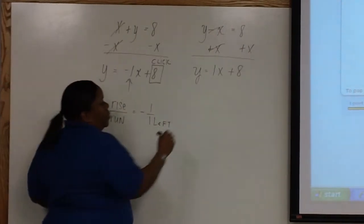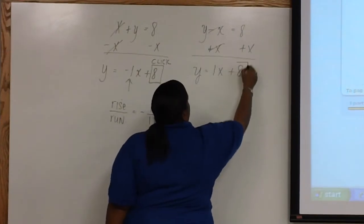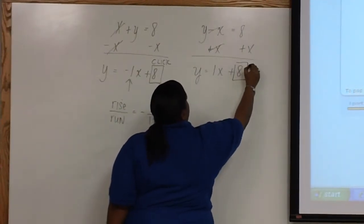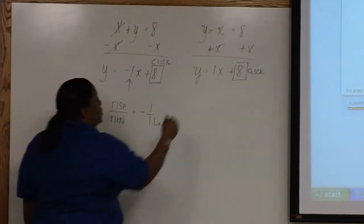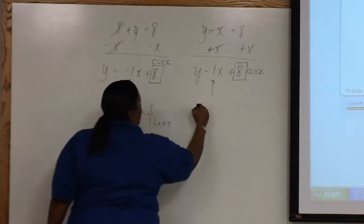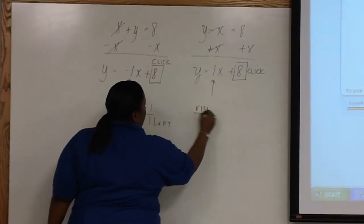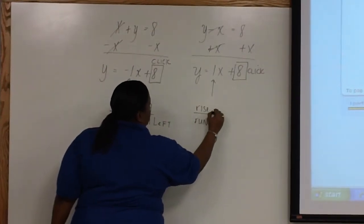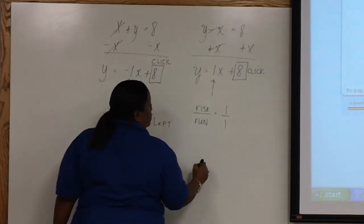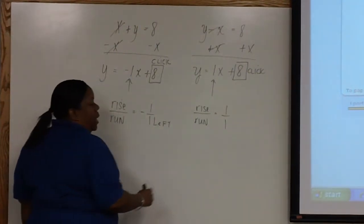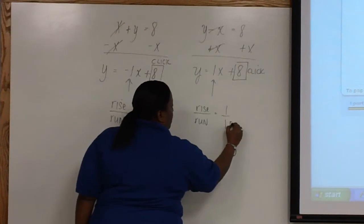In the second equation, the y-intercept is positive 8. So this is the first place we'll click on the y-axis. And our slope, also known as rise over run, is equal to positive 1. We can write that over 1. And because the slope is positive, we will run to the right.